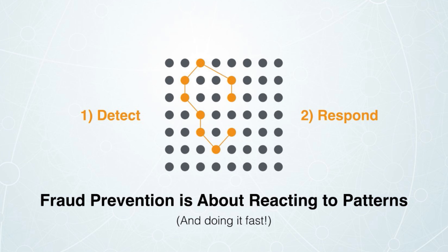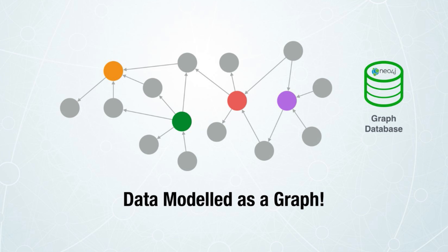Standard techniques and technologies like relational databases just don't cut it anymore. Fraud patterns are getting increasingly complex, and it's all about pattern analysis and discovery, which is best done in Neo4j, a graph database. In Neo4j, the transactions are stored as a graph, where related pieces of data are connected, making it easy to traverse those relationships in real time and to find the fraudulent patterns quickly.